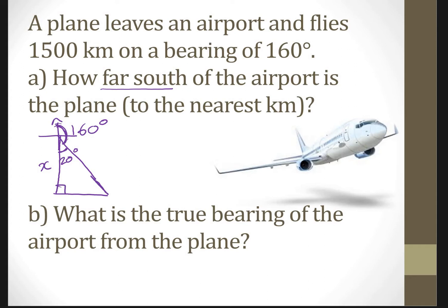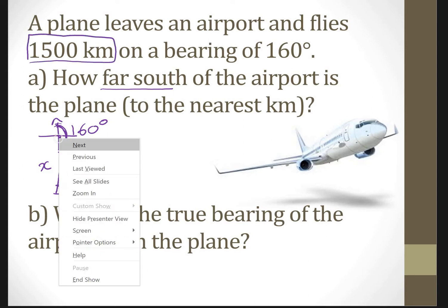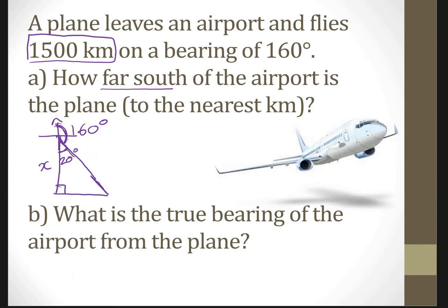The plane leaves an airport and flies 1500 kilometers — so the airplane flies all the way down, which is 1500 kilometers. That is your diagram. Now we're just looking for x. We have the hypotenuse and the adjacent here. So which trig ratio? CAH — you've got A and you've got H, so it's cosine.